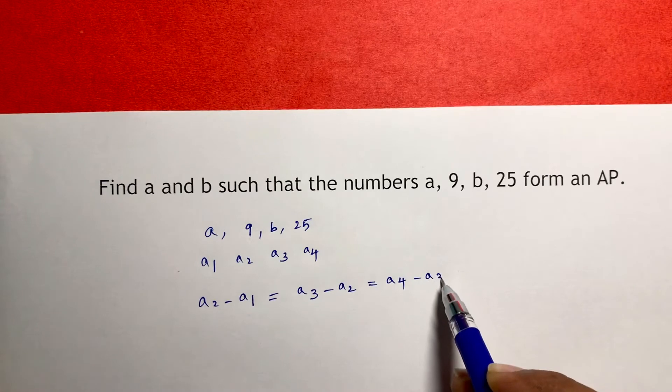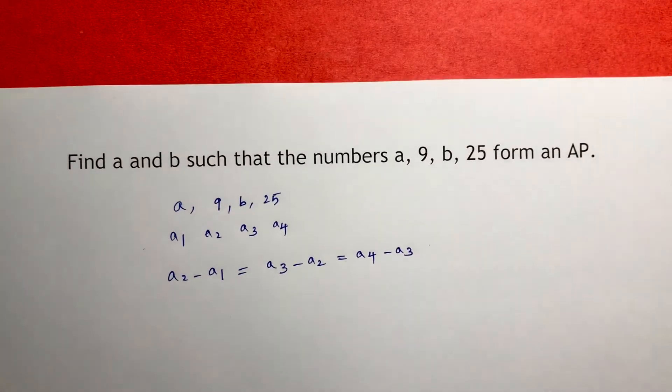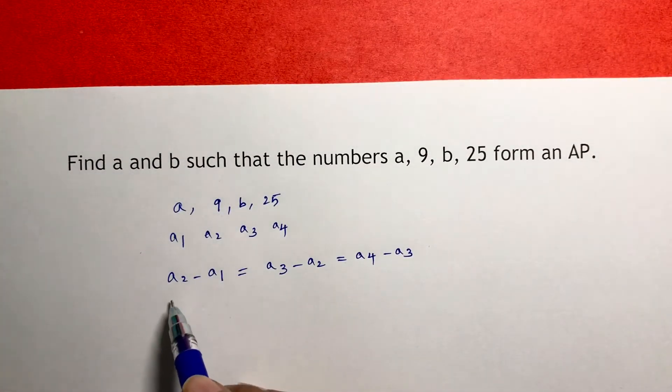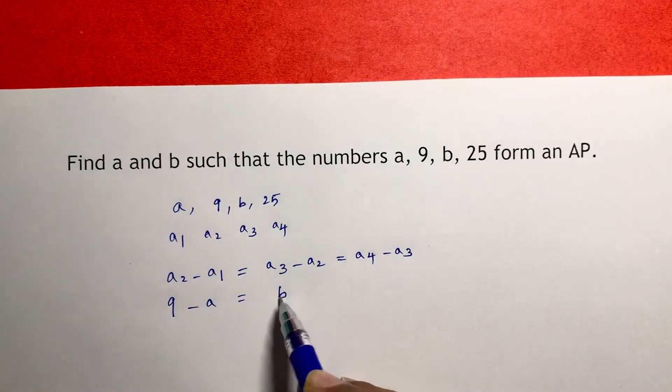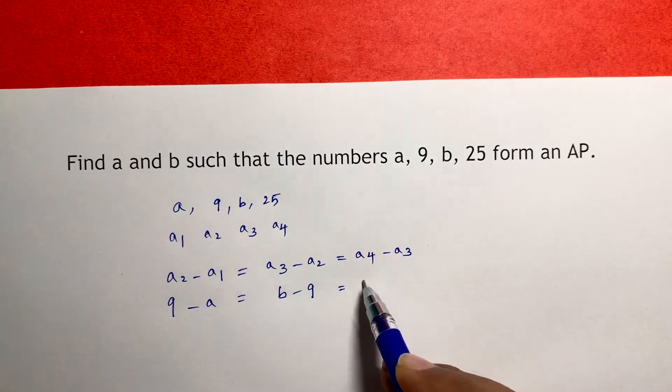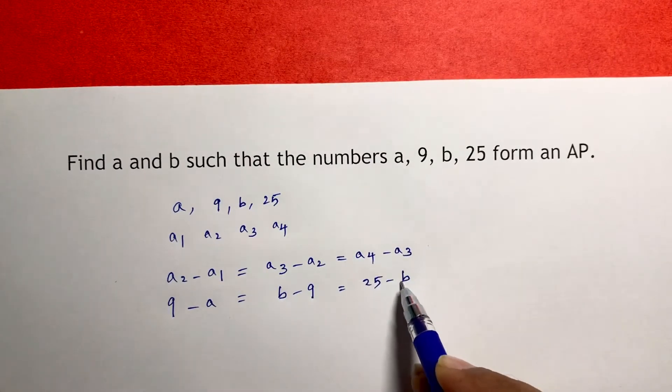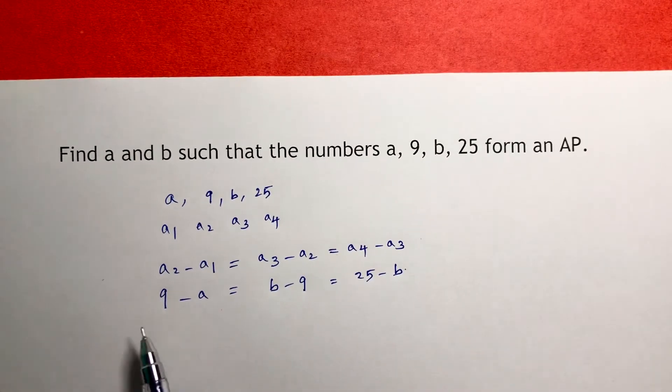Now here a2 is 9, minus a, b minus 9, and 25 minus b. So 9 minus a equals b minus 9 equals 25 minus b.